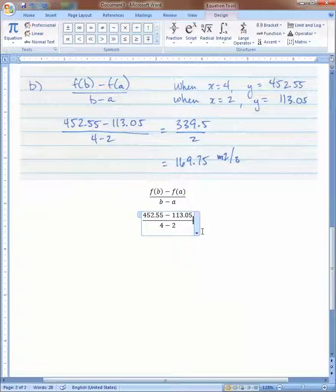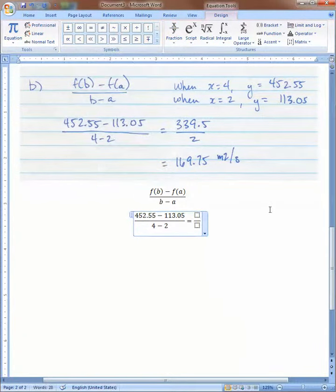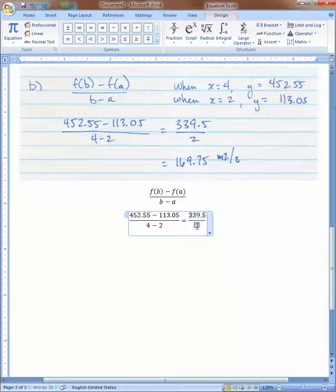Now, if I right arrow, see where my cursor is. I'm at the end of the fraction. I can add the other fraction. 339.5 over 2.